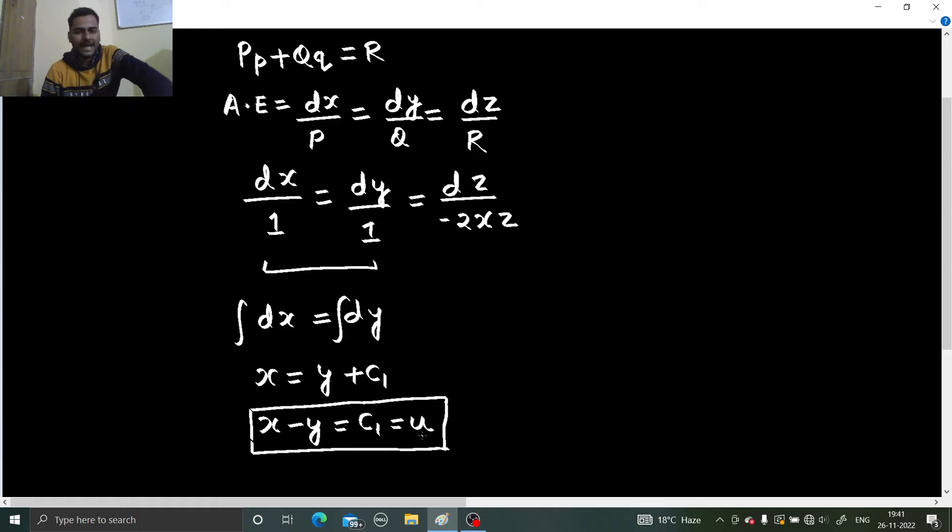What we can do? We can see that going with second and third one is not a good option because we have xz present there. So going with first and third might be a good option. Let us check with that. So dx equals to minus dz by 2xz. Can I take 2x to the other side? So 2x dx equals to minus dz by z. Let us integrate them.